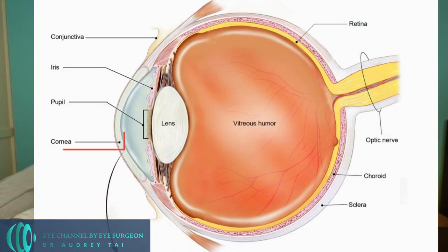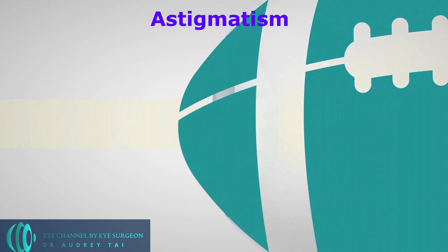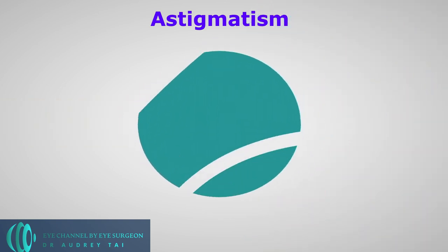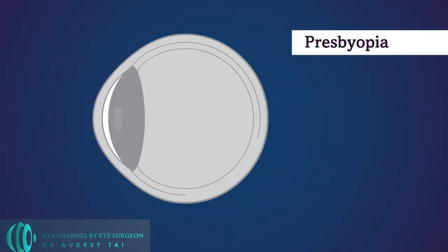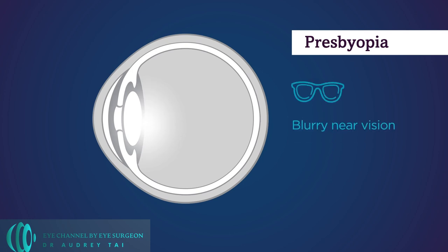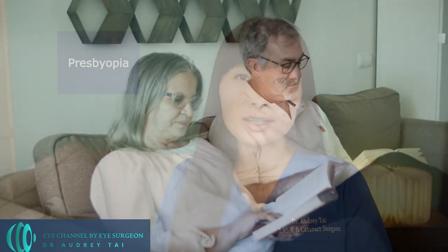The cornea should be shaped like a basketball, but in people with astigmatism, it is shaped more like an American football, which causes you to see a slight shadowy or ghost image next to the main image without correction. And the last vision condition is called presbyopia, meaning a progressive increase in the need of reading glasses to see small prints up close. Presbyopia usually starts after about age 40 to 45 and gradually gets worse over time.